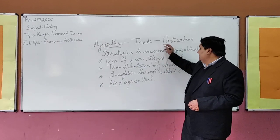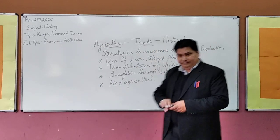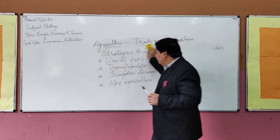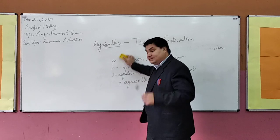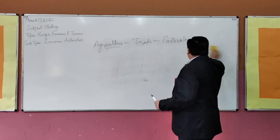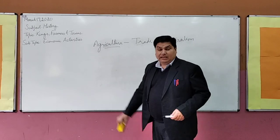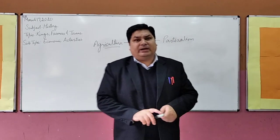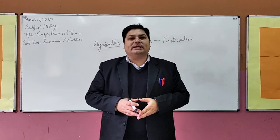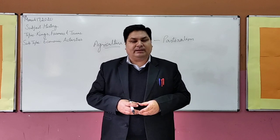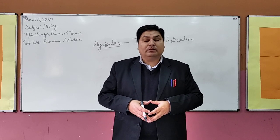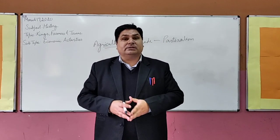Then we come to our second activity, that is Trade. India at that time had two types of trade — internal as well as external. Internal trade was carried out throughout the subcontinent, from Afghanistan and Gandhara in the north all the way up to Odisha, which was called Kalinga at that time. It was carried out through land routes mainly.